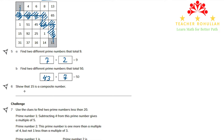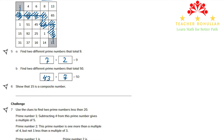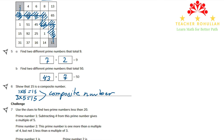In question 6, we show that 15 is a composite number. Based on the definition, a composite number has more than two factors. The factors of 15 are: 1 times 15 equals 15, and 3 times 5 equals 15. This shows 15 has more than two factors, so 15 is a composite number.